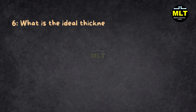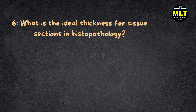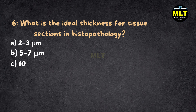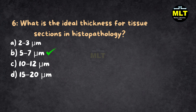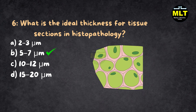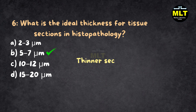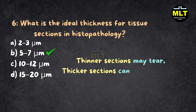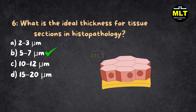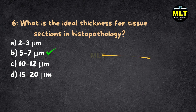Question 6: What is the ideal thickness for tissue sections in histopathology? Options: A. 2–3 microns, B. 5–7 microns, C. 10–12 microns, D. 15–20 microns. Correct Answer: B. 5–7 microns. Explanation: Tissue sections are sliced at 5–7 microns for optimal clarity under the microscope. Thinner sections may tear, and thicker sections can obscure details. This precise range ensures accurate diagnosis — it's like the perfect slice of cake, just the right thickness.